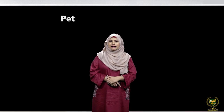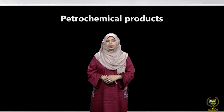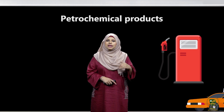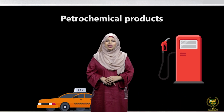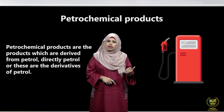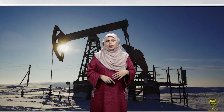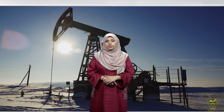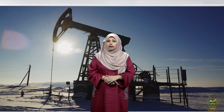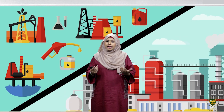Let's discuss some examples. First are petrochemical products — as the name indicates, these are products which are derived from petrol, or are derivatives of petrol. When we extract oil from the ground, that is called crude oil. We don't get petrol directly; from crude oil we make other petrochemical products by refining or modifying them.